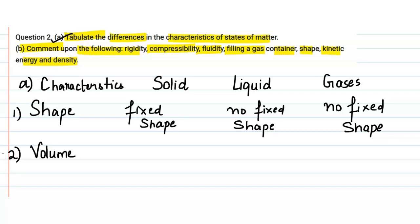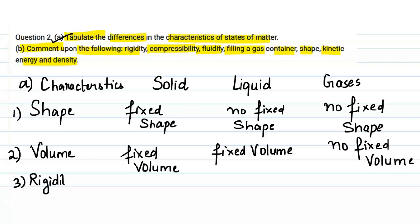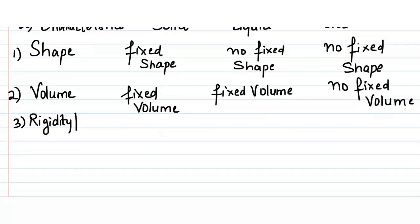The next characteristic is volume. On the basis of volume, solids have a fixed volume. Liquids also have a fixed volume, but in the case of gases, they do not have a fixed volume.